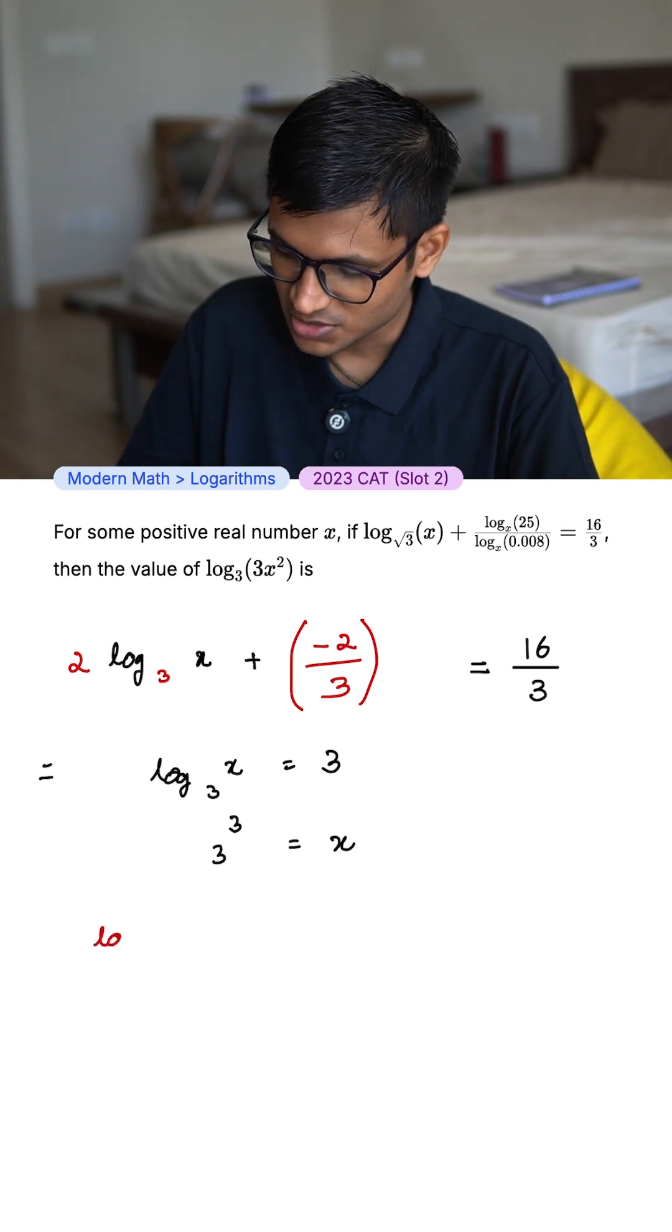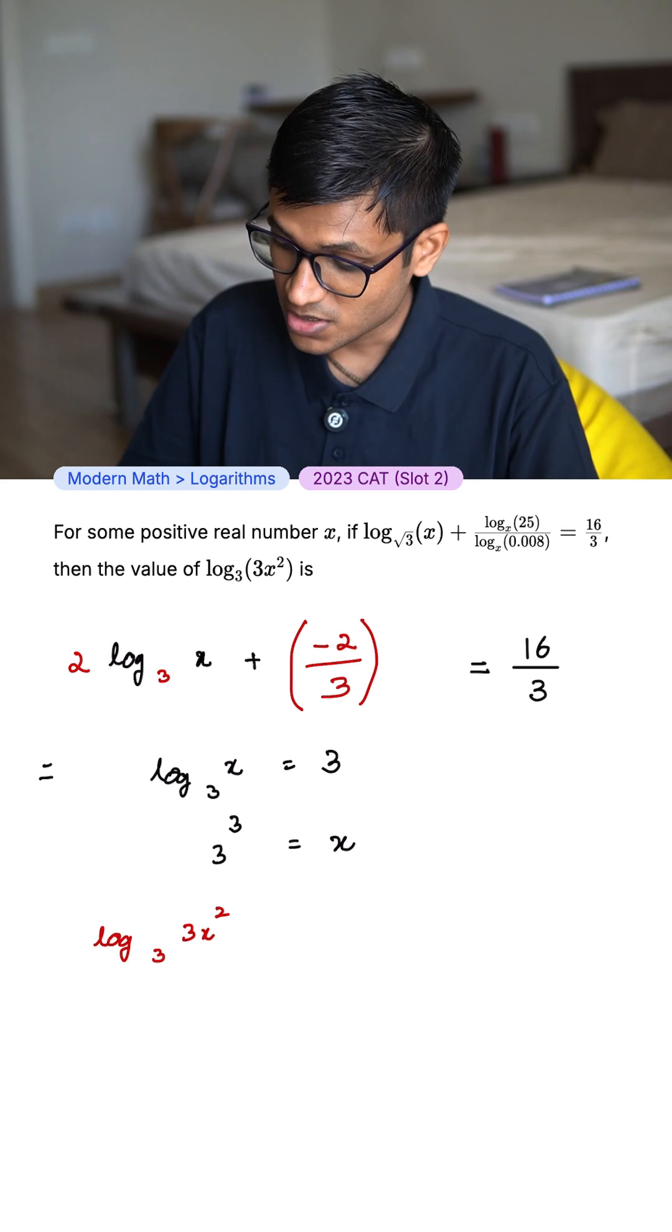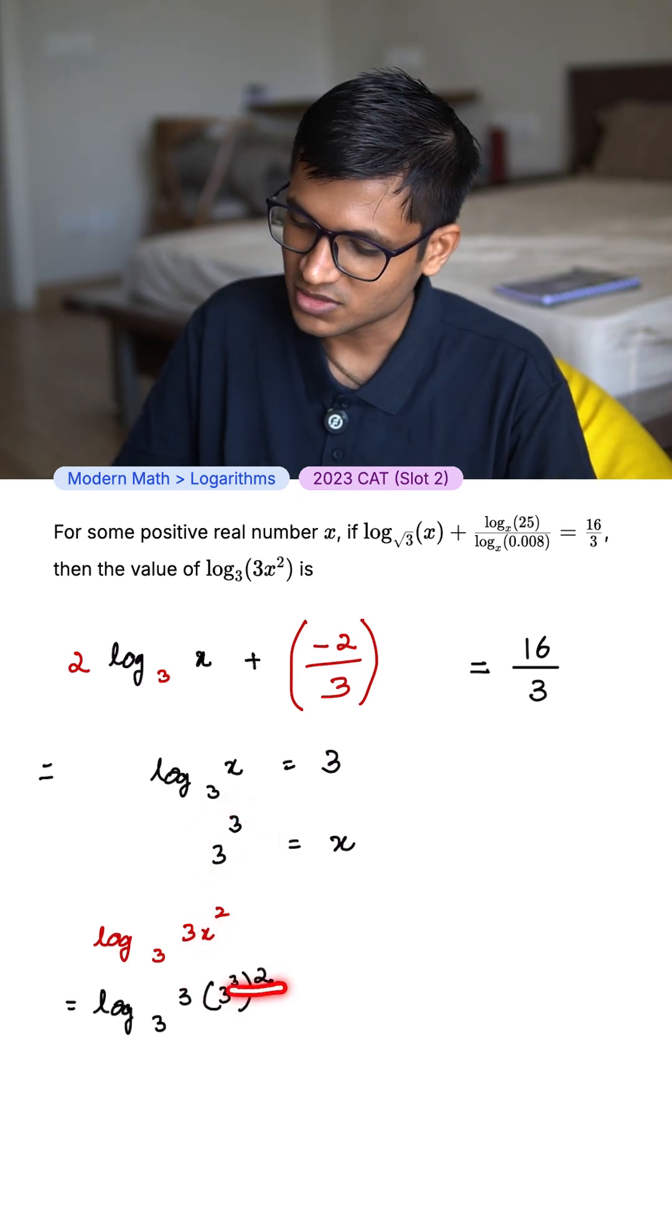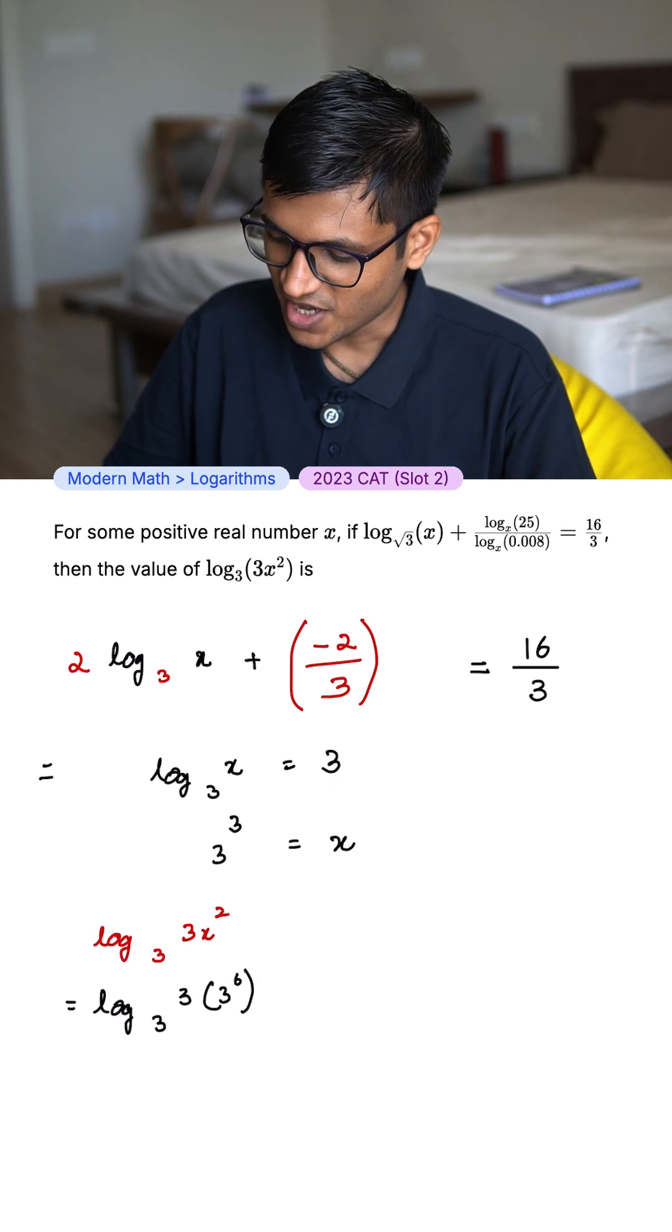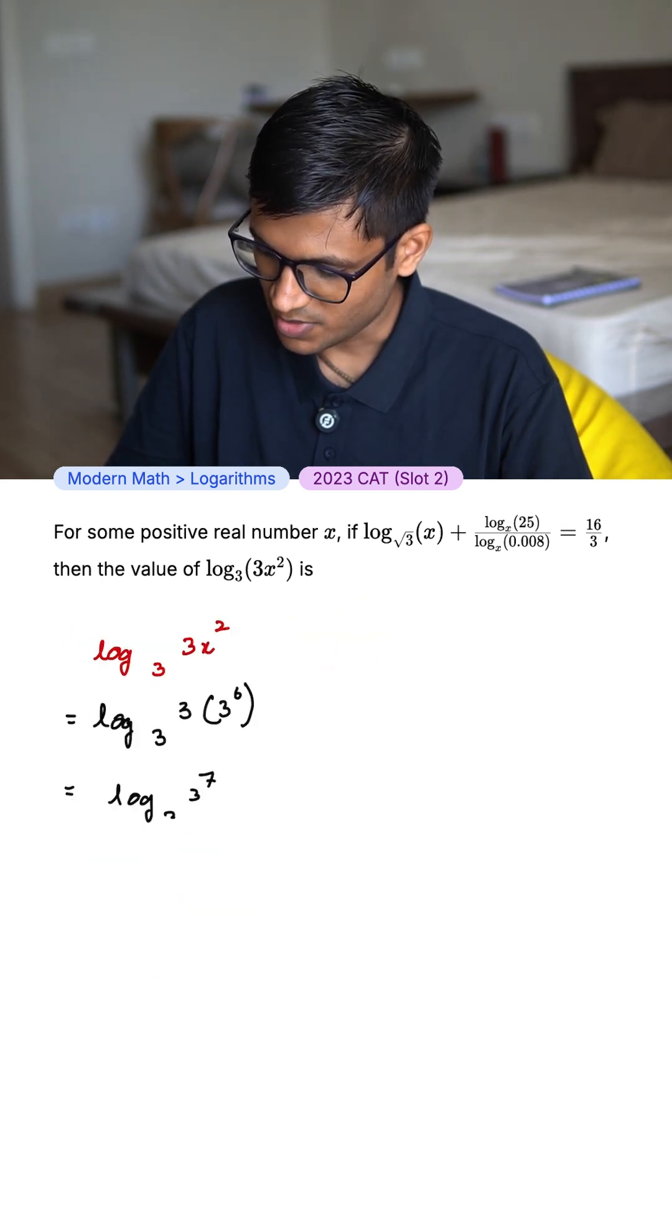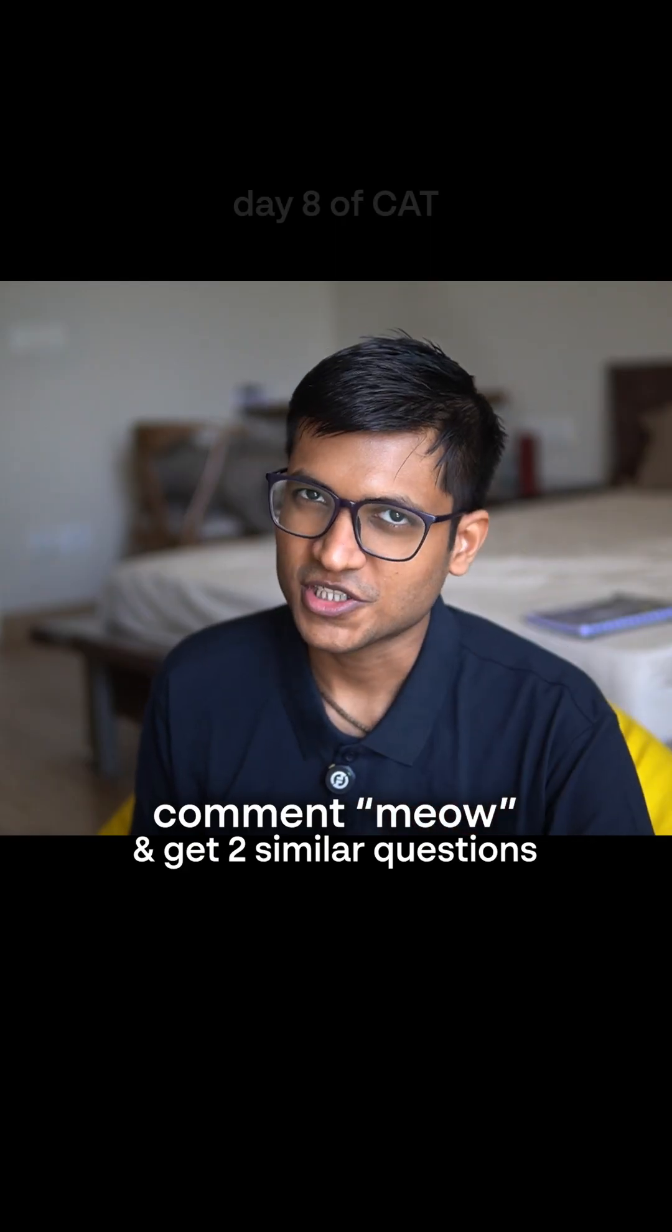The question asks us to find the value of log 3 x square base 3. Let's substitute this x with 3 to the power 3. When we have powers like this, we can just multiply them. And finally, we have log 3 to the power 7 base 3. The final answer is 7. Comment meow and get 2 similar questions for free.